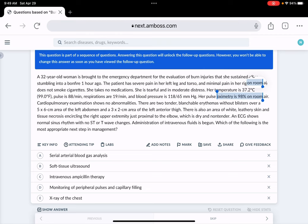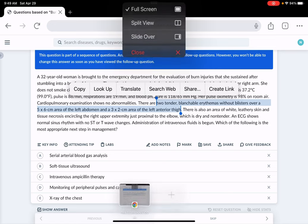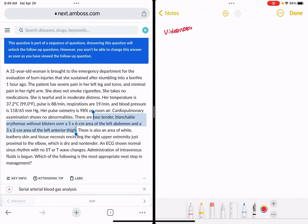Her vitals are stable as well as her oxygen saturation. Two tender blanchable erythemas without blisters over a certain area of the left abdomen. The fact he's giving you specific areas here is to calculate burn surface area according to Wallace rule of nines. This patient is stable but she has blanchable erythemas, meaning it's a first-degree burn.